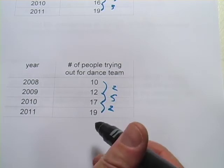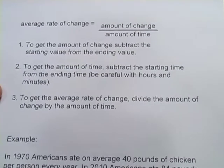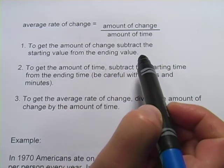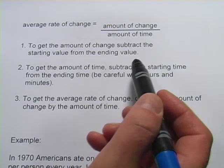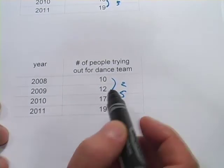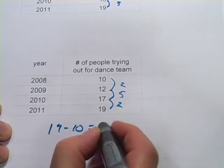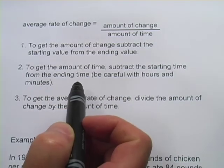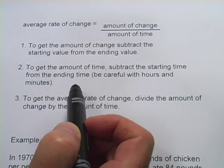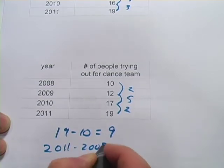I want to show you a method for figuring this out where you don't have to worry about looking at the individual years. The average rate of change is going to be the amount of change divided by the amount of time. To get the amount of change you simply subtract the starting value from the ending value. In the case of this data set we would take 19 minus 10, that's going to equal 9 — that's our amount of change. To get the amount of time you subtract the starting time from the ending time. So 2011 minus 2008 equals 3.